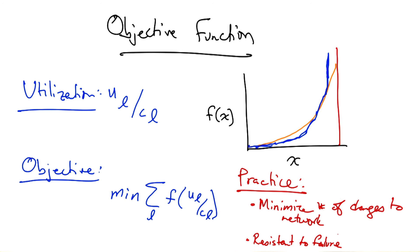Whatever solution we come up with must be resistant to failure and it should be robust to measurement noise. We also want to limit the frequency of changes that we make to the network.